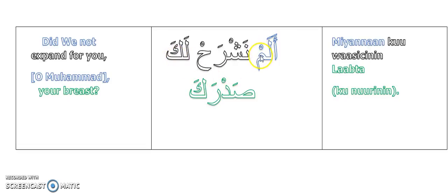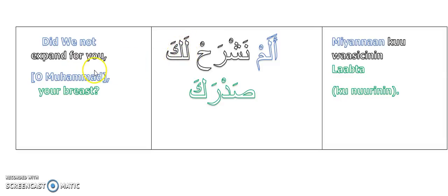Alam nasharach laka sadaraka — Did we not expand for you? So this kaf, it is the pronoun which is towards Nabi Allah Muhammad sallallahu alaihi wasallam — laka, for you, O Prophet Muhammad sallallahu alaihi wasallam. Sadaraka — your breast. Jazakum Allahu khayran.